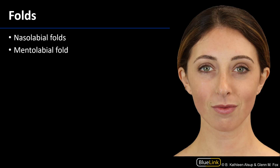We have a few folds to discuss. There are the nasolabial folds, which go out laterally, and then we have a mentolabial fold — between the mental region and the lips. The nasolabial folds and the mentolabial folds are going to surround the oral fissure.